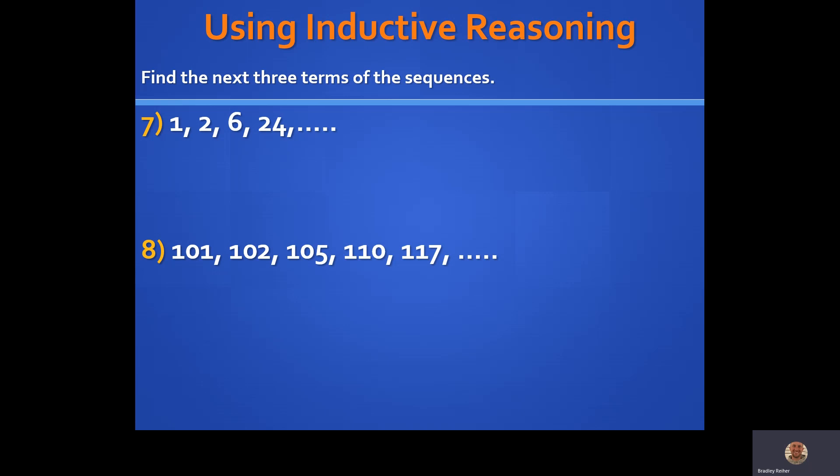Okay, so to repeat on that one, our answers there would be 120, 720, 5,040. Different sequence. We're multiplying by an extra term each time.